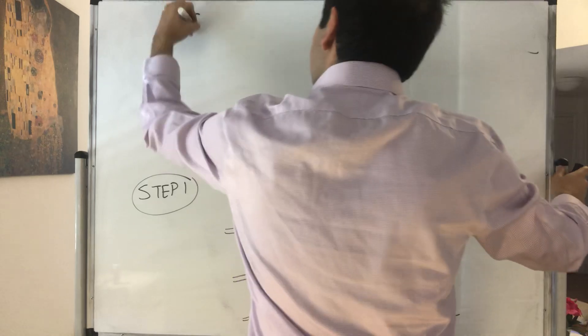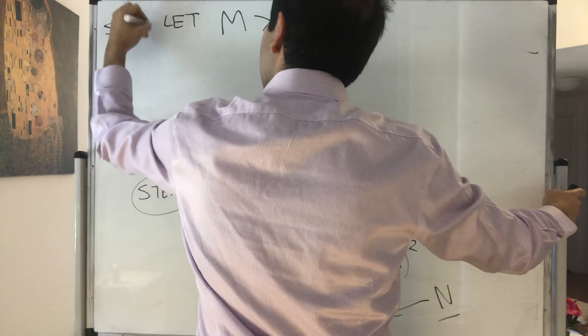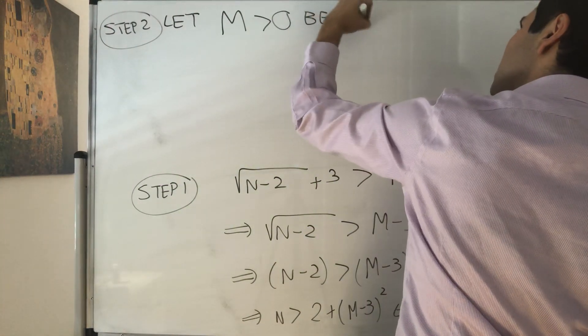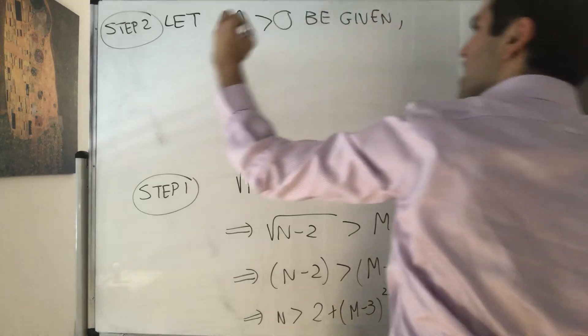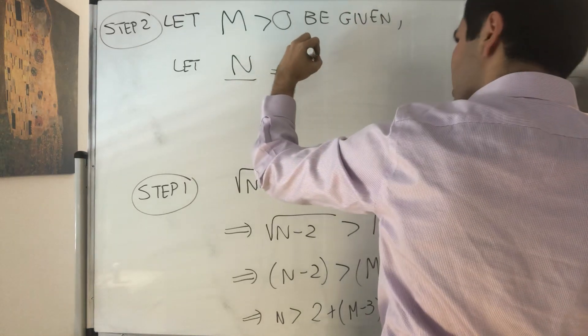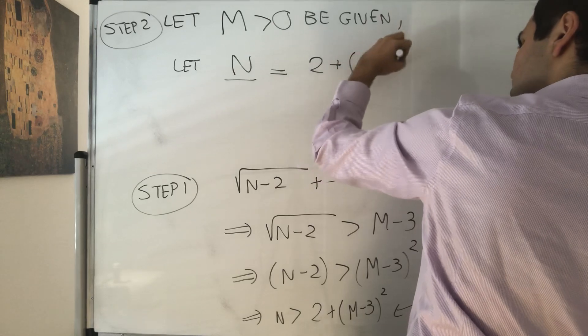So, let capital N, so that's step two, our proof, so let capital M positive be given, and let capital N be just 2 plus m minus 3 squared.